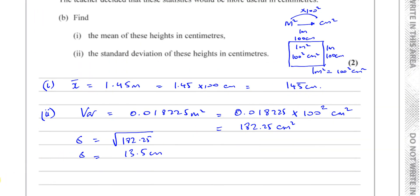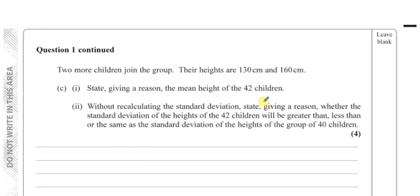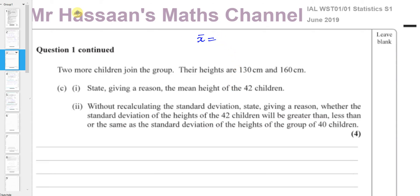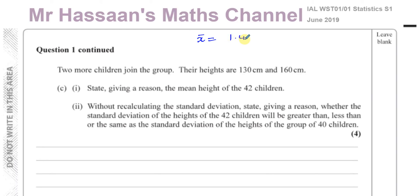Now part C: two more children join the group with heights of 130 centimetres and 160 centimetres. State, giving a reason, the mean height of these 42 children.